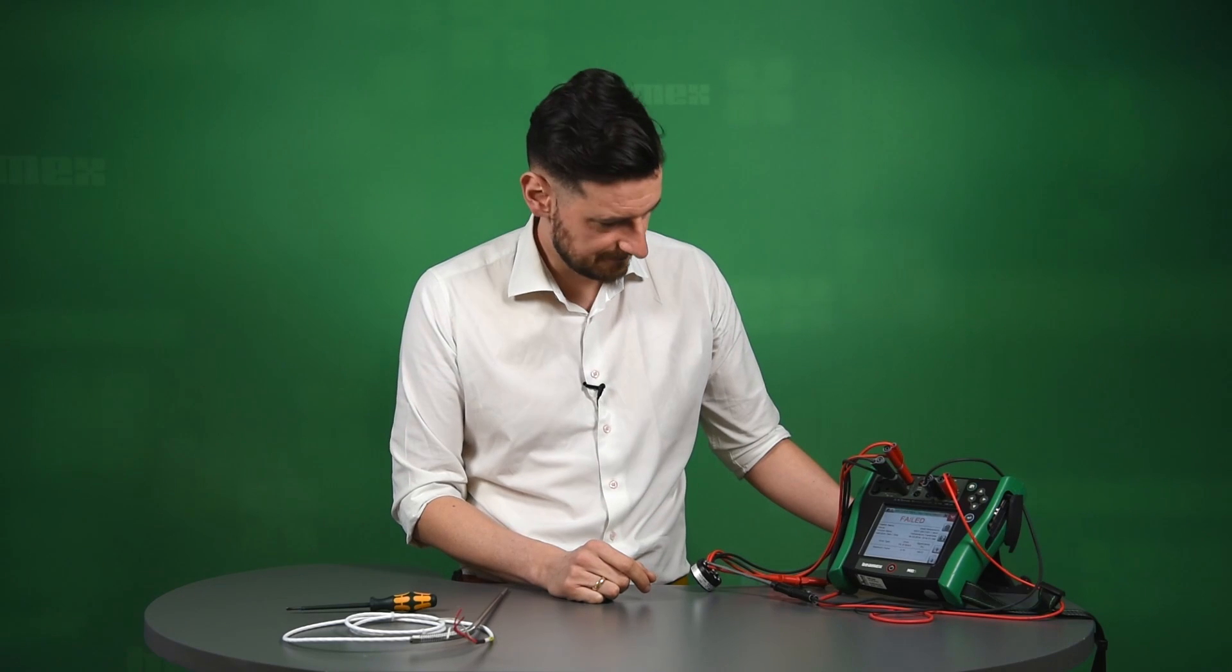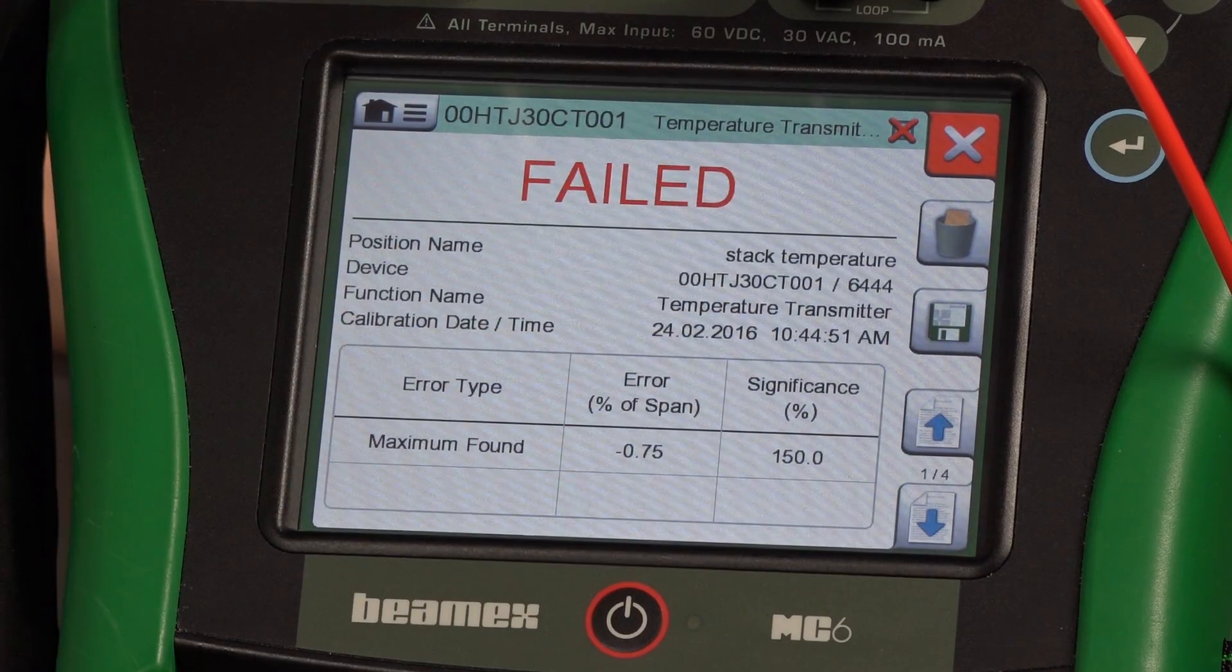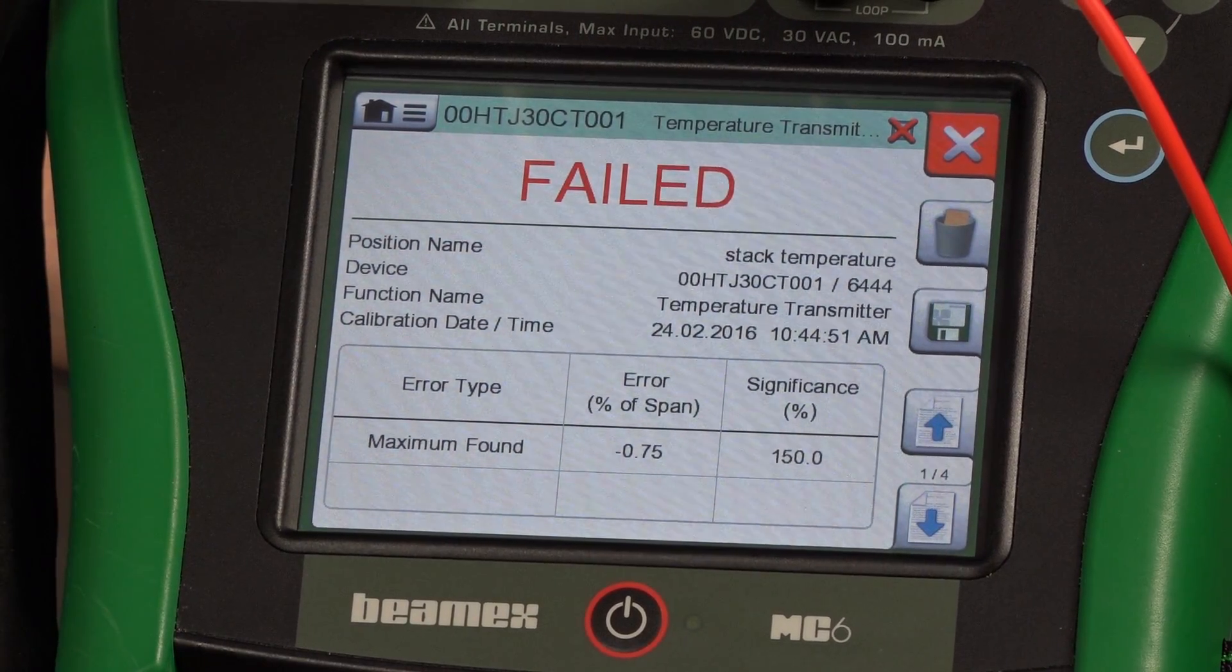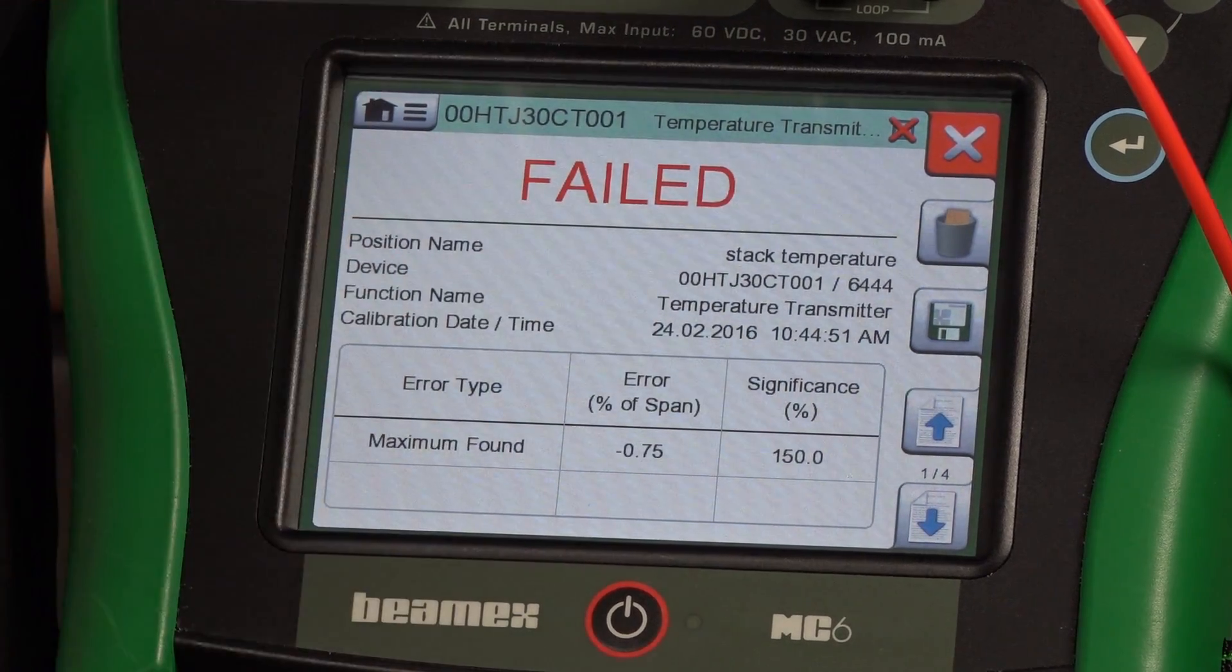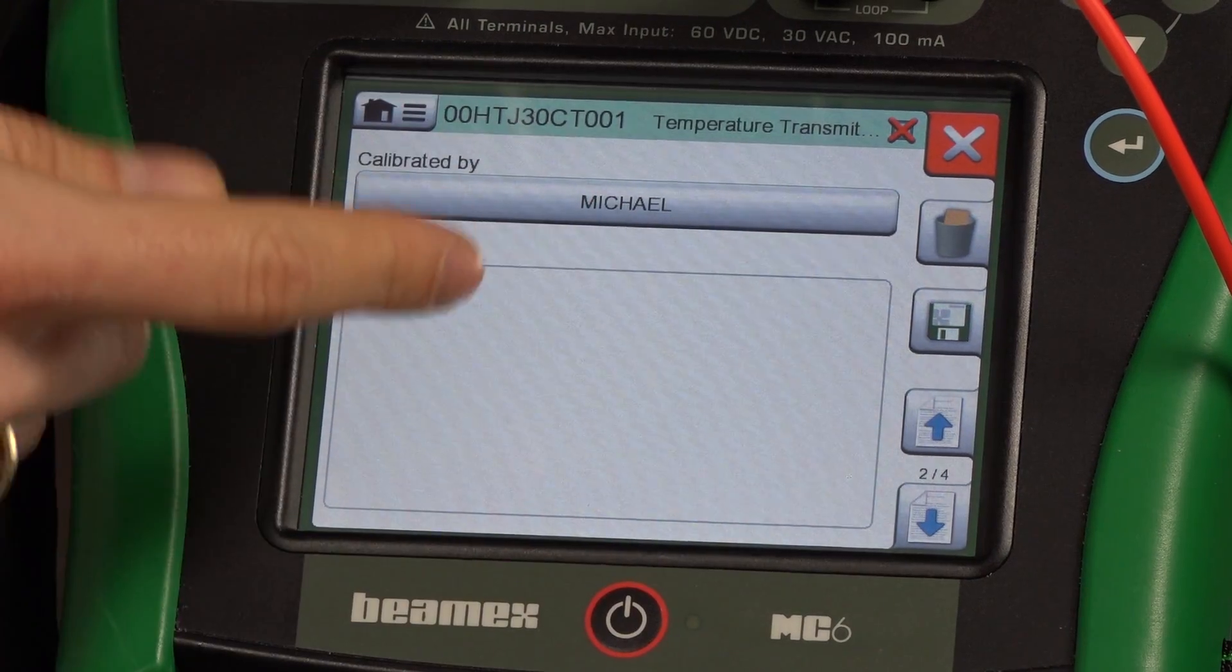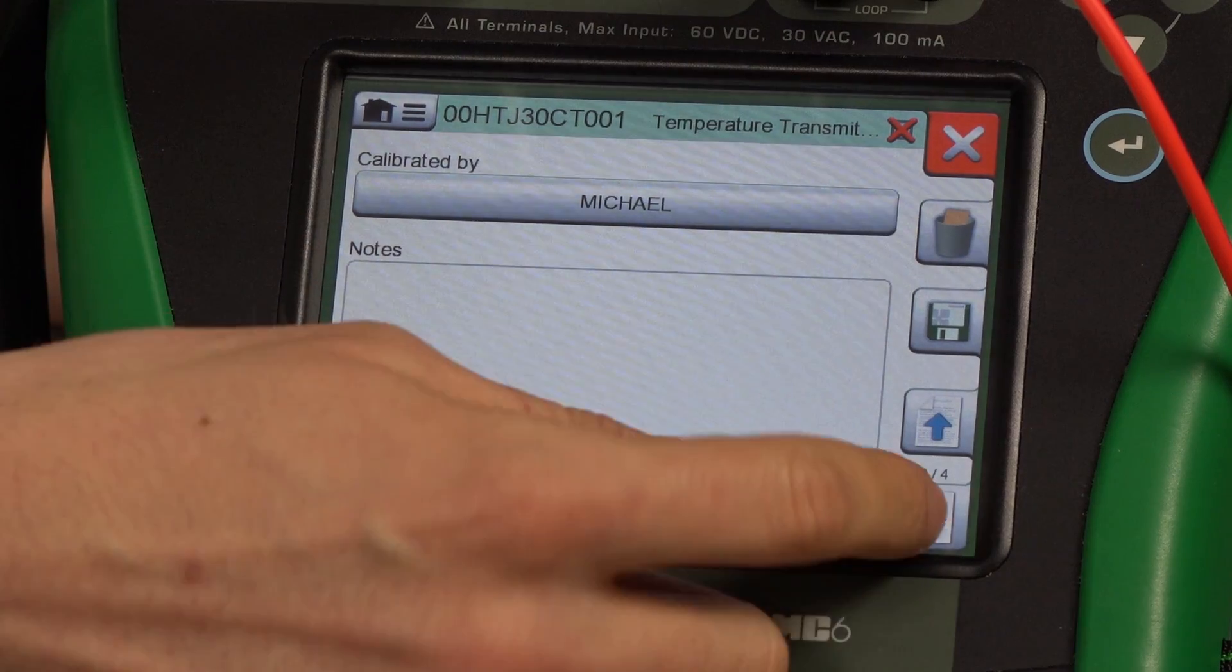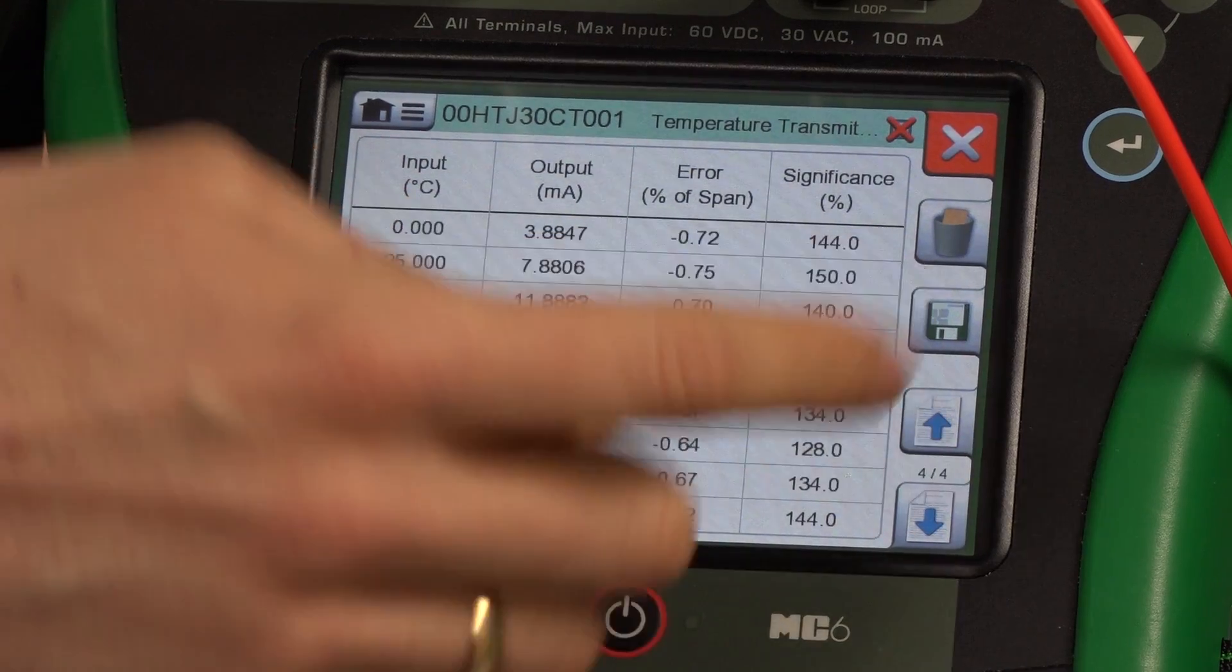So this is our failed calibration. It looks as if we have done 0.75 percent of span error. So this is obviously a greater error than we anticipated. It's 150% significant error, which means that we are obviously outside of our tolerance. This value is very important because it shows us where we are in terms of our tolerance. We could put any information about it, why it failed, if we know why it has happened. You can see the graph, you can see the numbers behind the graph.